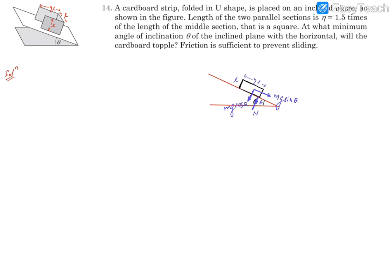Friction acts in the backward direction to prevent sliding; it is static friction since the object is not moving. The point about which toppling happens is named point A. At just toppling condition, the torque about A must be zero. Normal reaction and friction pass through A so they provide no torque. The torque of Mg sin theta acts at a height of L by 2 from point A.